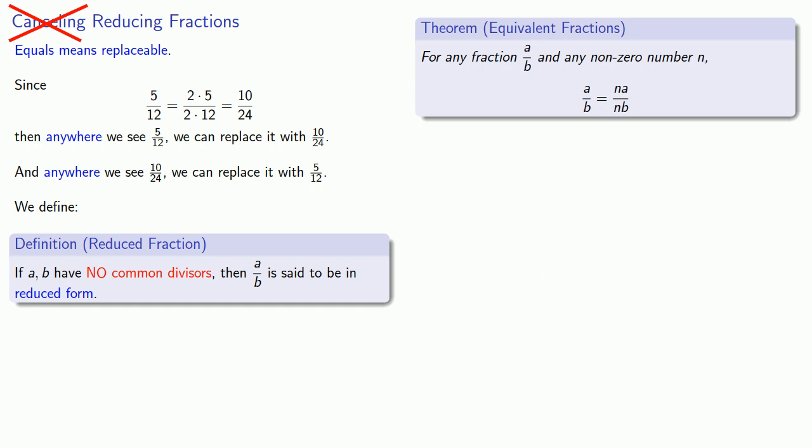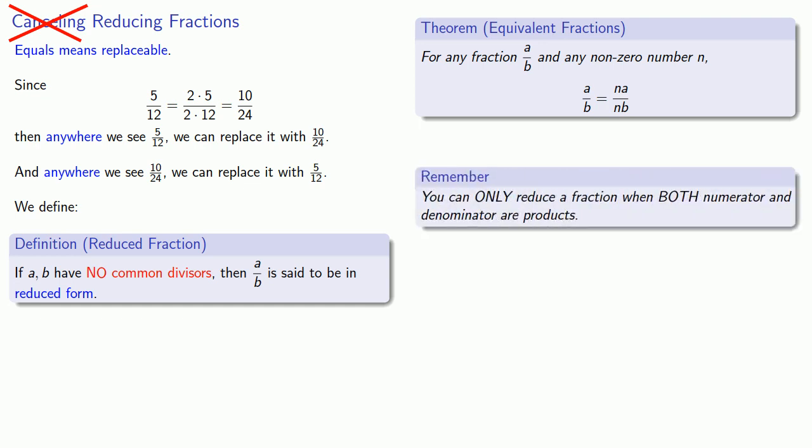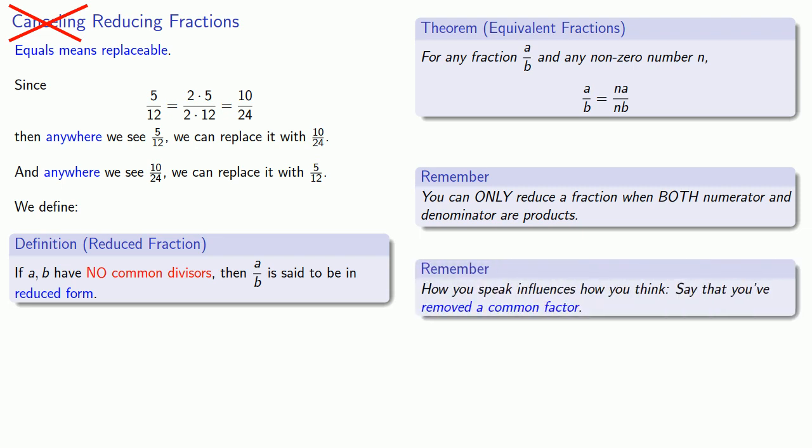Now here's why it's important not to use the word cancel. What we've done is we've gone from this form, N A over N B, to a simpler form, A over B, by removing a common factor. But you can only remove a common factor when you have factors, and so you can only reduce a fraction when both numerator and denominator are products. The important thing is that cancel only requires that we have the same thing. Removing a common factor requires that we actually have a factor. So how you speak influences how you think. If you say that you've removed a common factor, this is a reminder that you have to have a factor.